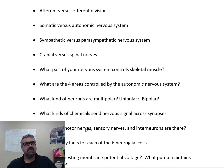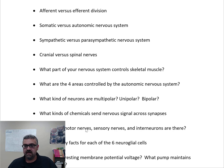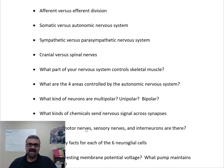Somatic versus autonomic nervous system: somatic means body — think skeletal muscle, controlling joints. Your somatic nervous system controls skeletal muscle, both voluntary and involuntary (reflexes). Autonomic think automatic or subconscious. The autonomic nervous system controls cardiac muscle, smooth muscle, glands, and fat — things you can't consciously control.